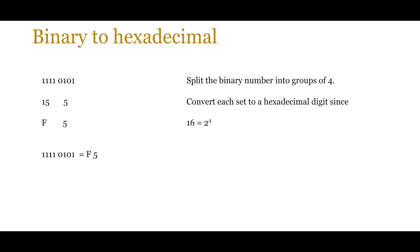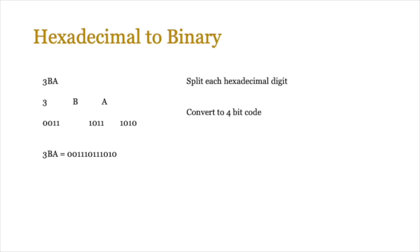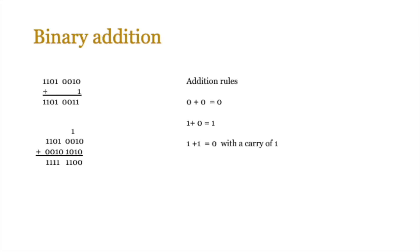Binary to hexadecimal is straightforward — each 4-bit binary nibble is equivalent to one hexadecimal digit. Split the binary from right to left into groups of 4. For example, 1111 equals 15 which is F in hexadecimal, and 0101 equals 5. For hexadecimal to binary, reverse the process: take each hex digit and convert it to a 4-bit nibble. So 3 becomes 0011, B becomes 1011, A becomes 1010, and you join them all together.